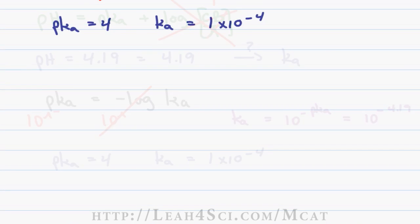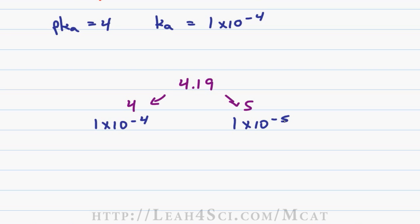If this is not enough to isolate your answer, you then want to find the range where your Ka will fall out. We'll take the number 4.19 and round it down to 4 and up to 5. A pKa of 4 has a Ka of 1 times 10 to the minus 4. A pKa of 5 has a Ka of 1 times 10 to the minus 5. That means the number we're looking for is somewhere in this range.